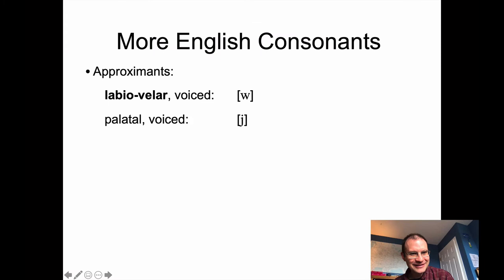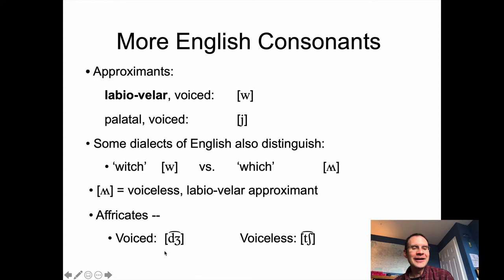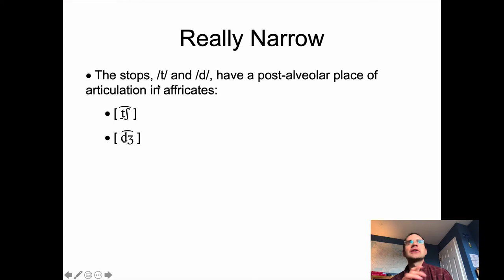There are two affricates in English: the voiced 'ja' and the voiceless 'cha.' Both are post-alveolar. The stops in these affricates are generally produced with a post-alveolar place of articulation — slightly further back than the alveolar T. In a narrow transcription, you could transcribe the T in 'cha' with a backed diacritic to indicate it's retracted to that post-alveolar place of articulation.